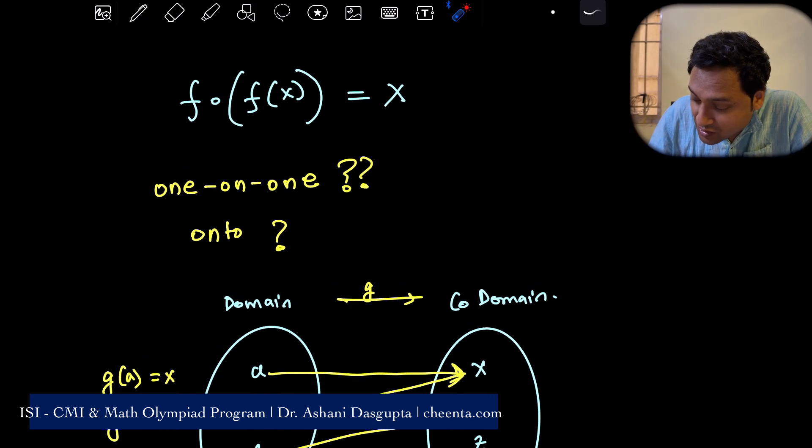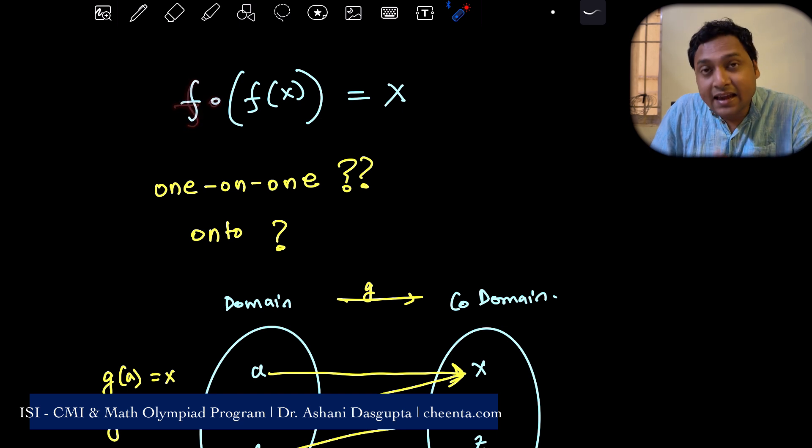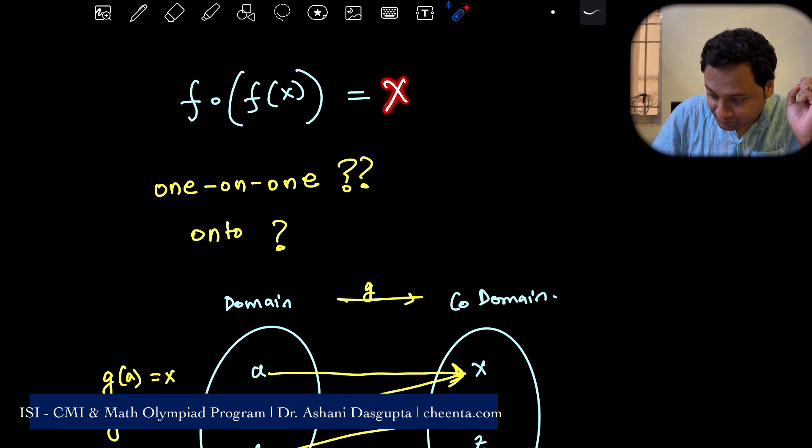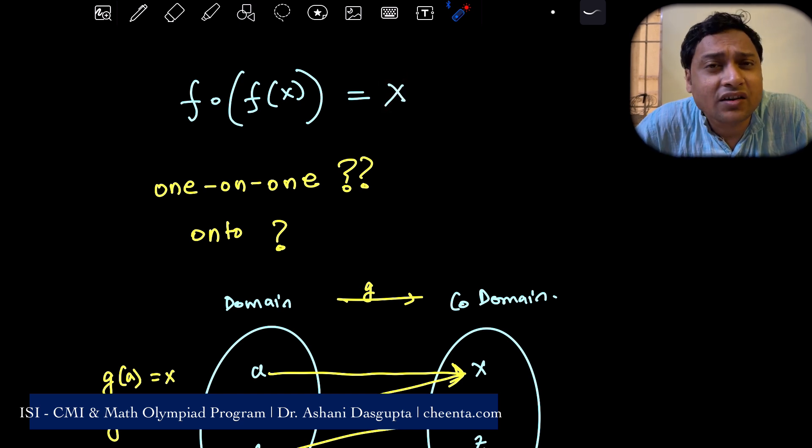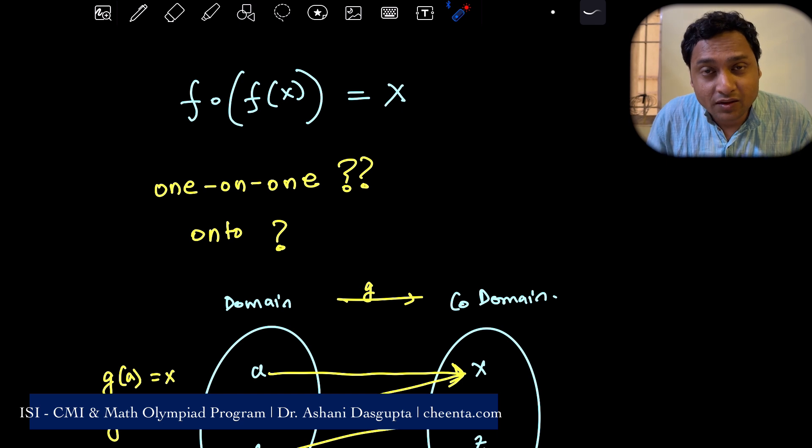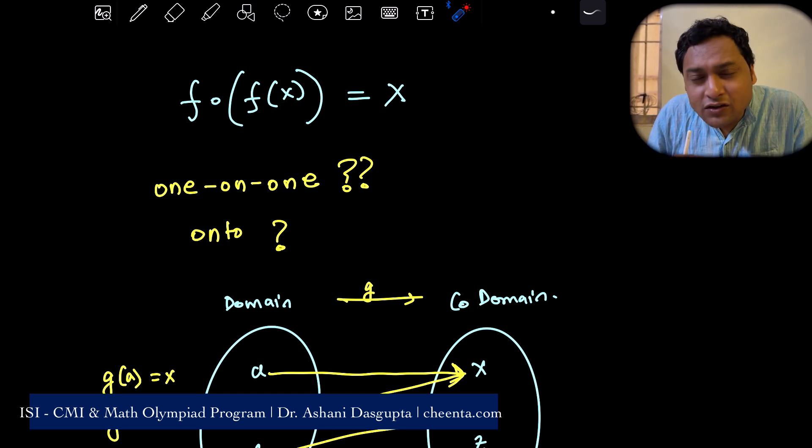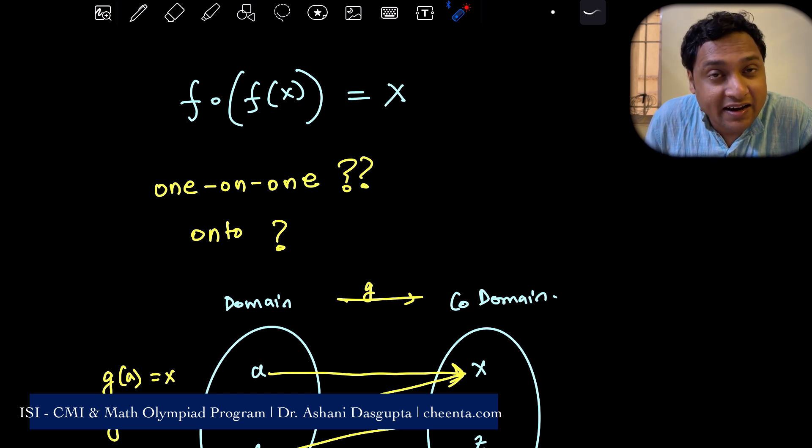The problem says that suppose you have a function f such that f of f of x, that is if you compose f with f, f of f of x is x. Can we say that the function is one to one? Can we say the function is onto? We will learn quite a bit using this one problem. I will show you how to test out one-on-ness and onto-ness of a function. I will also modify this problem slightly and give you a challenge problem at the end of this video.